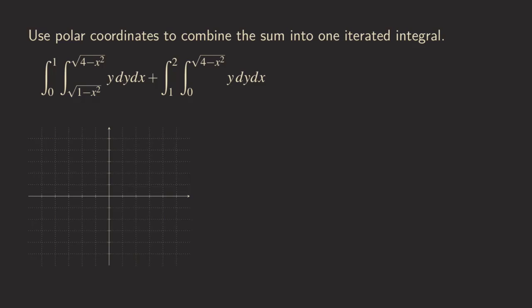Hello everyone, it's Wilson here. Today let's talk about using polar coordinates to rewrite the sum of those two integrals into one iterated integral. The way to do it is to first just graph the region of integration for each one and then see what the region looks like.